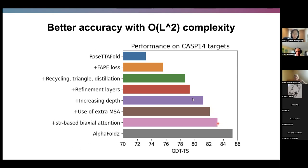We implemented the new 3-track-only architecture with a simplified extra MSA block using columnized attentions to reduce memory for larger MSAs. We trained this model with extra MSA blocks, 36 main 3-track blocks, refinement layers, recycling, and the extended dataset. This 3-track-only architecture actually performs better than the mixture of 2-track and 3-track architecture with triangle updates and triangle attentions. The pink color on the benchmark is much better than the previous RF model and much closer to AlphaFold2. At that point, we decided to add side chain modeling, as so far it was backbone-only.